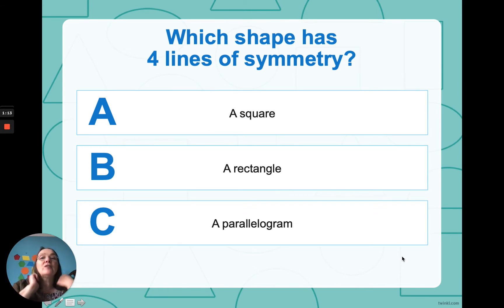Right. Which shape has four lines of symmetry? Again, if you were with me this morning, you're probably going to know this. Is it a square, a rectangle, or a parallelogram? Well, it's a safe time. I'm going to tell you, it's a square.